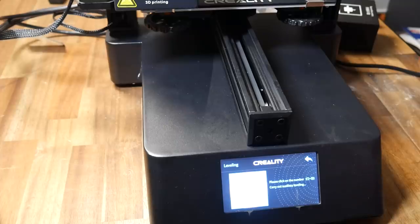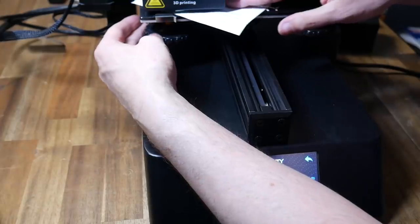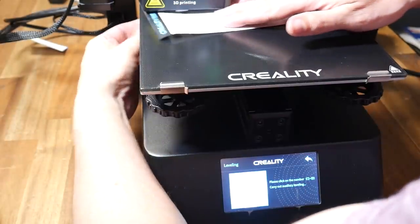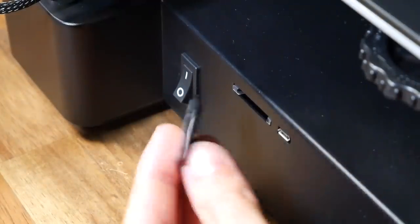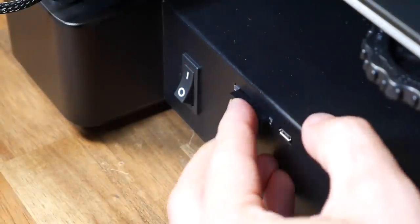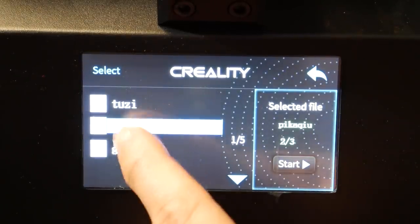Bed levelling is manual, but there is an LCD screen to move the nozzle to 5 different points, and then you use the age old technique where you put the paper underneath and adjust the thumb wheels until it just touches. I'm very pleased to report that the SD card is full size instead of micro, and from it I selected my first test print, and I chose the Pikachu.